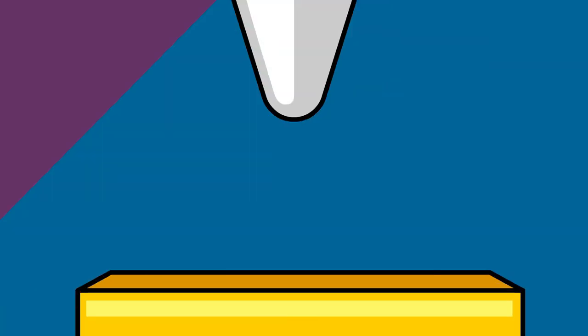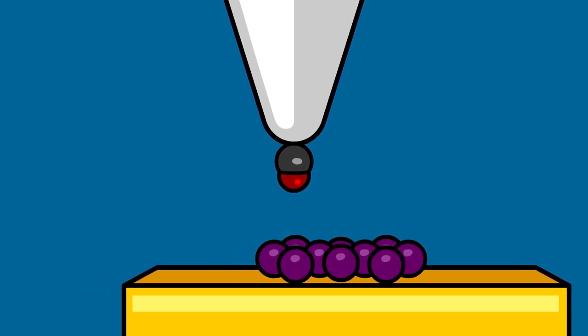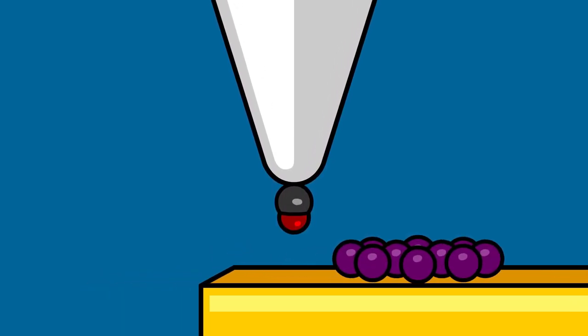To map out the electrostatic field of a molecule of interest, first you take a scanning tunneling microscope and absorb a molecule of carbon monoxide onto the tip of its scanning probe. Then you take a gold plate and absorb your molecule of interest onto its surface. Finally, have the probe scan the surface of your sample.